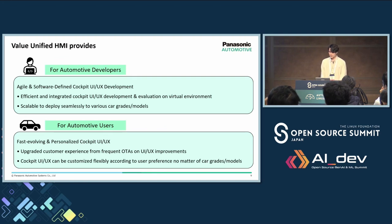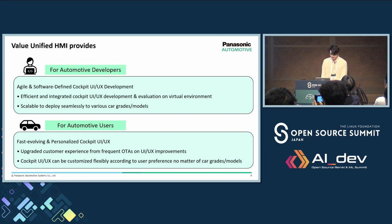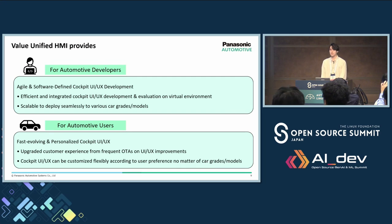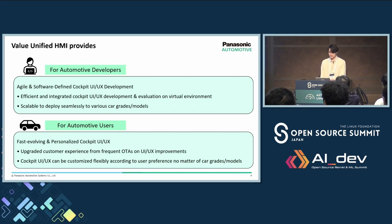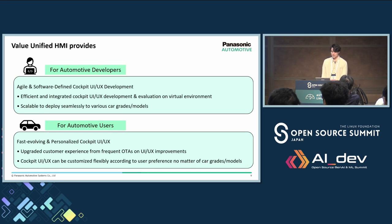Now, I will summarize the value of unified HMI from the perspective of both automotive developers and users. Automotive developers will be able to do agile, software-defined cockpit UI and UX development. Specifically, unified HMI enables efficient and integrated cockpit UI and UX development and evaluation across multiple displays. And because it can seamlessly adapt to various car grades and models, it enables the reuse of software assets from old car models and grades. Automotive users can experience fast and personalized evaluation with cockpit UI and UX.